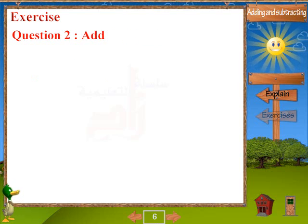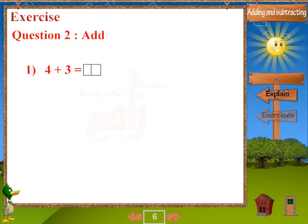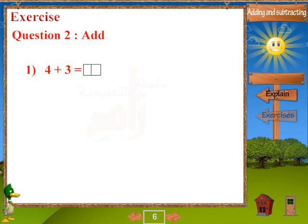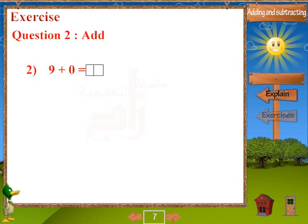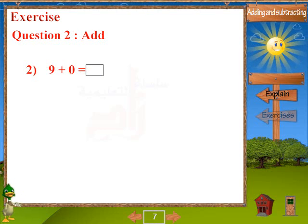Question 2: Add. 1. 4 plus 3 equals 7. 2. 9 plus 0 equals 9.